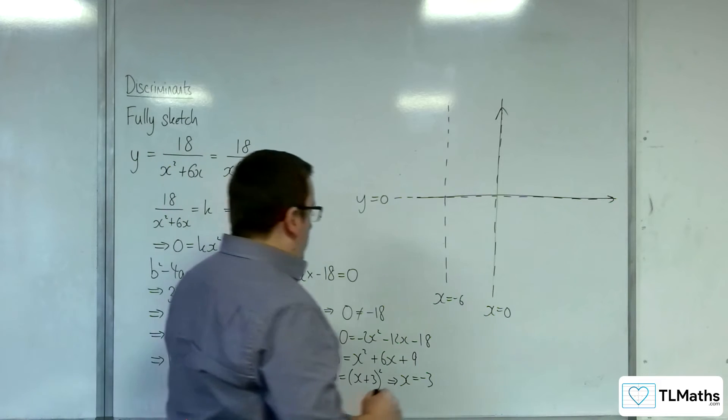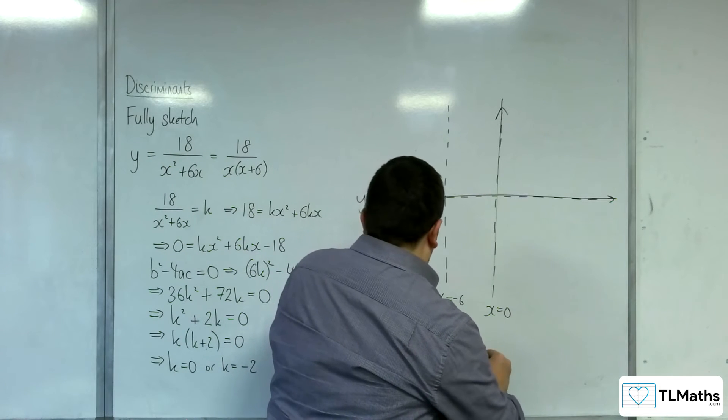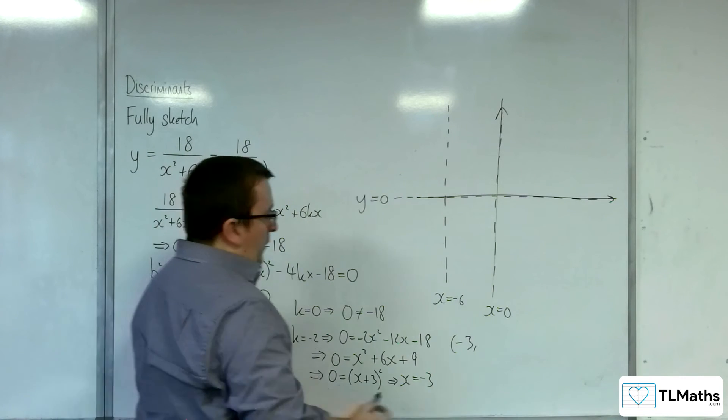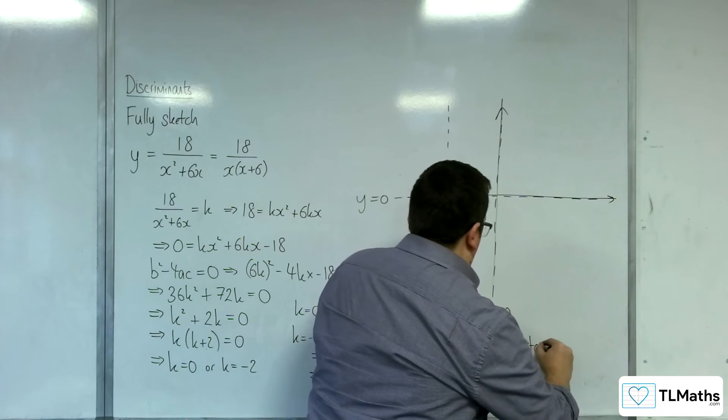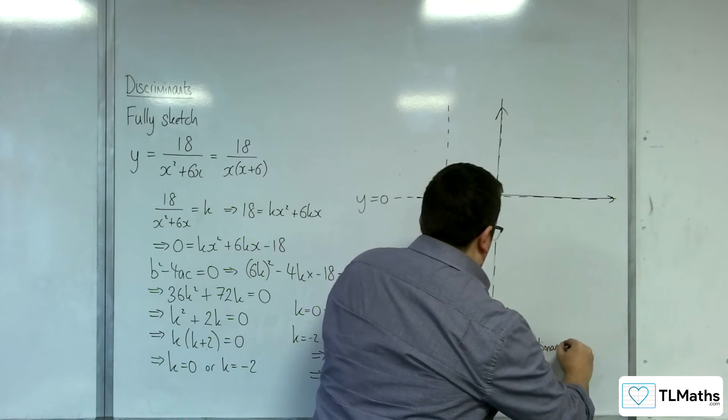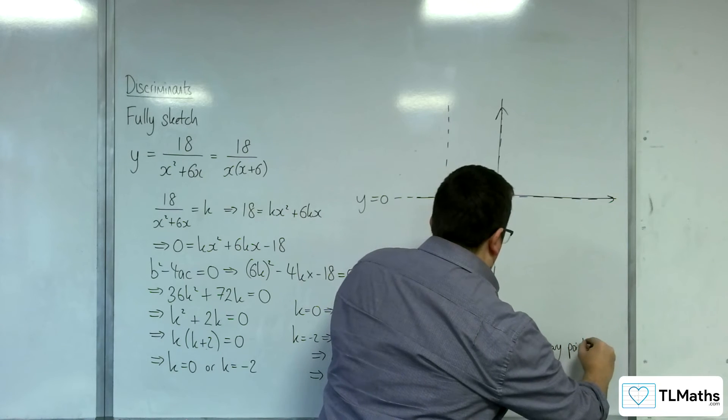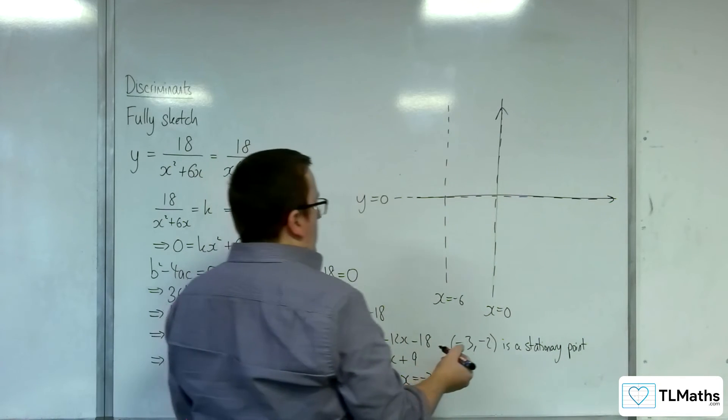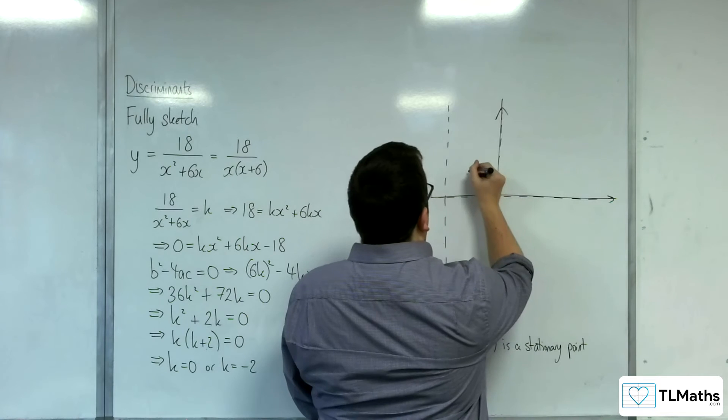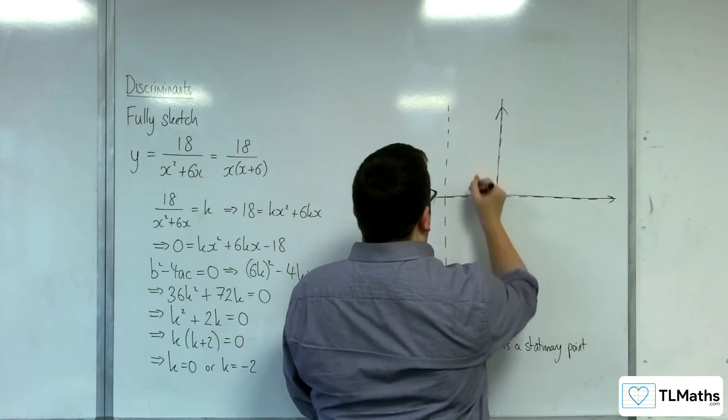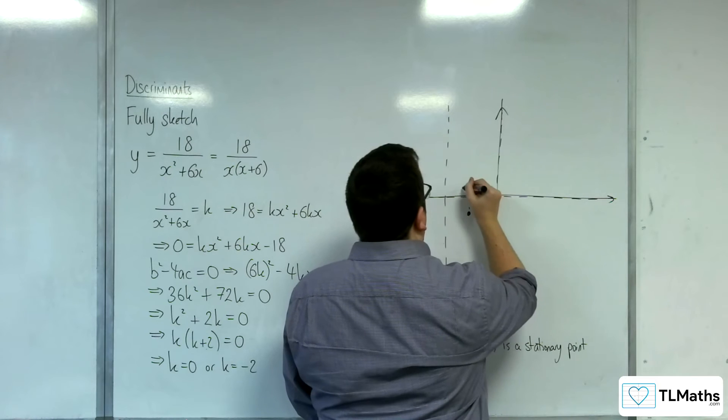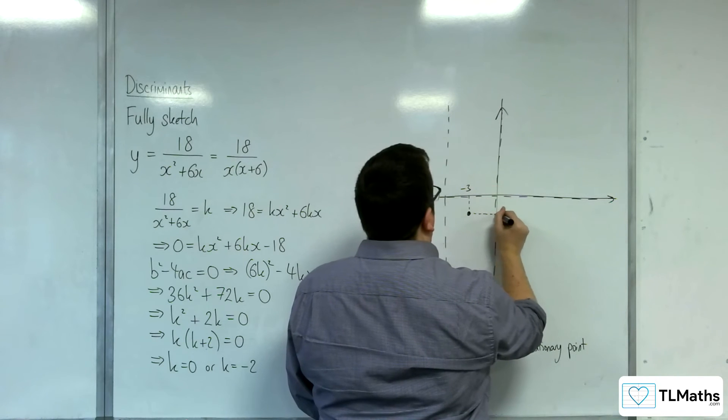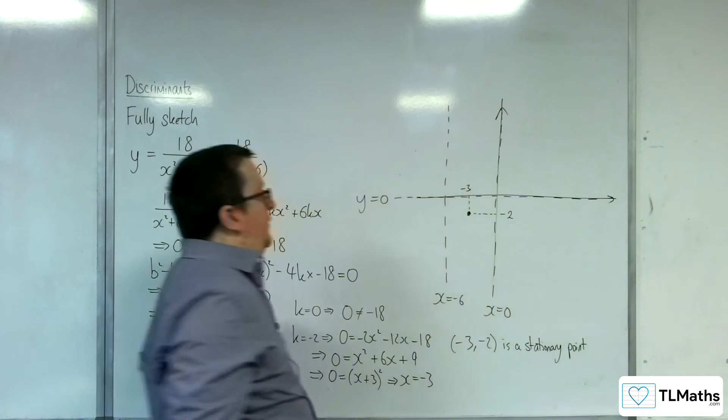So that's telling me that minus 3, minus 2 is a stationary point. So minus 3, minus 2. I was almost going up there. So that point there is a stationary point.